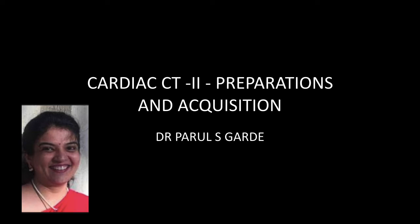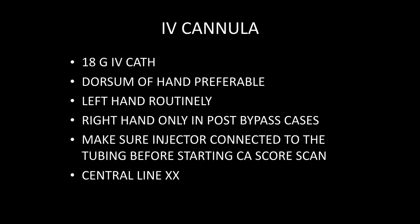In the previous lecture we discussed pre-procedural preparation of the patient undergoing cardiac CT. Now we shall see what is required once the patient is on the table. First and foremost, a wider bore IV cannula should always be used — preferably 18 gauge — because the flow of contrast in cardiac CT always ranges from 5 to 6 ml. We prefer to take the IV line on the dorsum of the hand rather than the antecubital fossa, because the vein might bend when the patient is asked to raise his hands above the head.